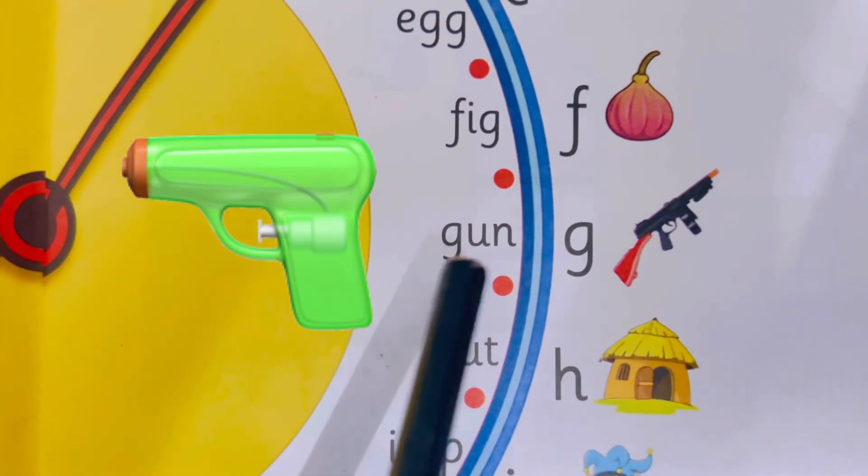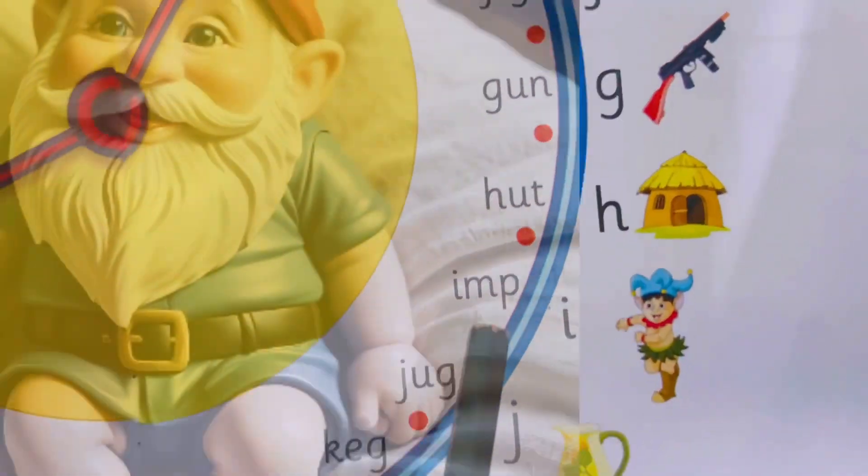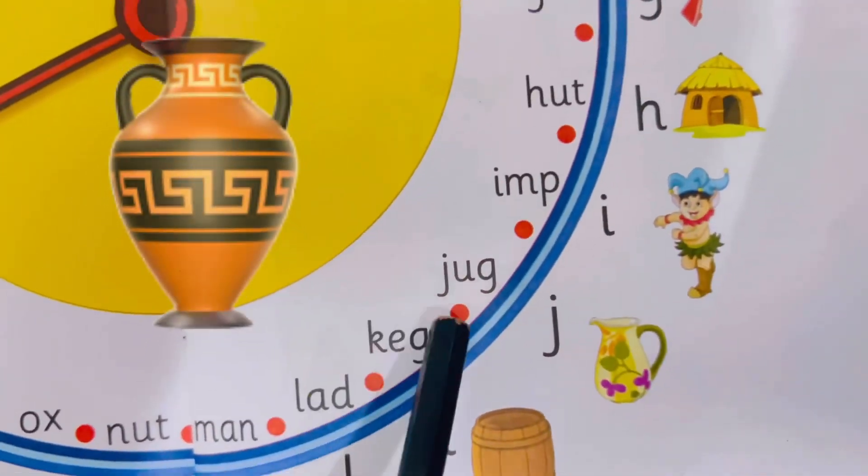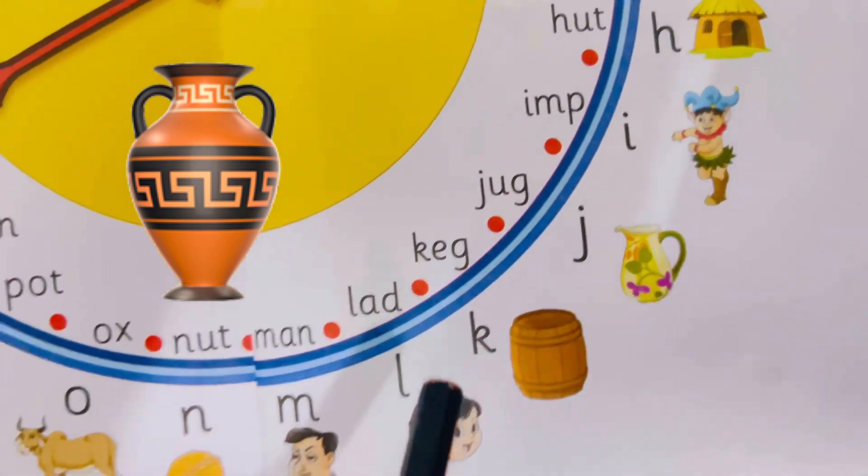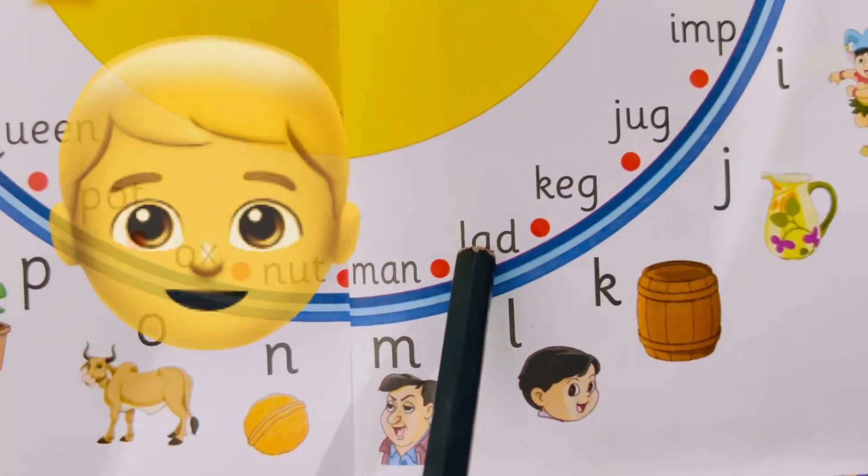G, G, Gun. H, H, Hut. I, I, Imp. J, J, Jug. K, K, Keg. L, L, Lad.